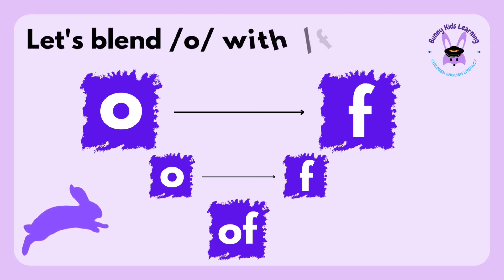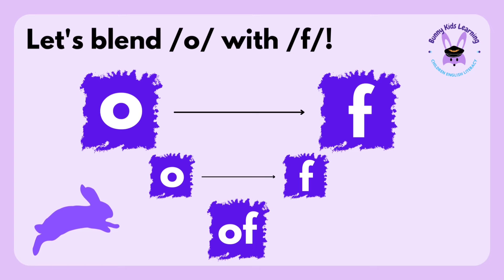Now, one more — the letter O and the letter F. The sound of the letter O is O. The sound of the letter F is F. Drag the O longer: off. Shorter: off. Together: off, off.